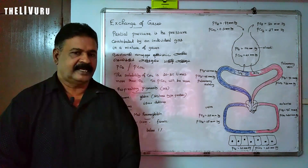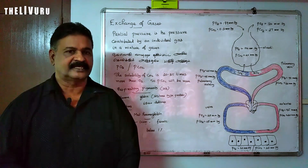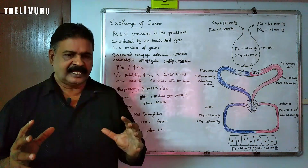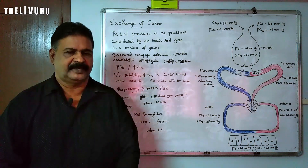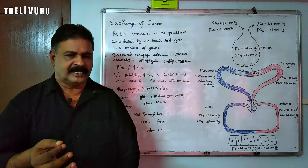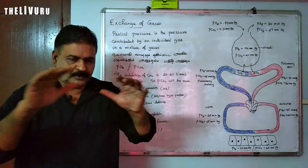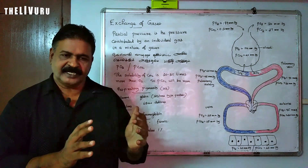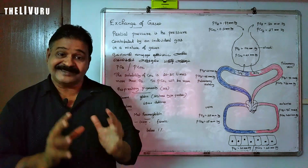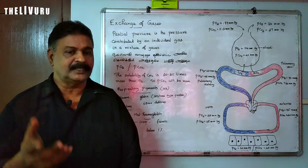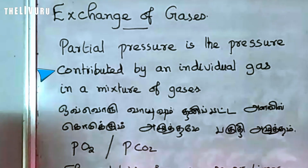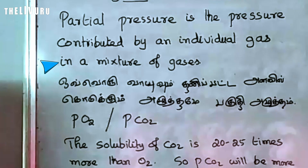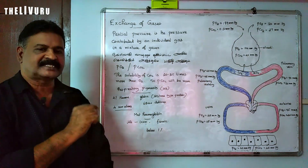In this container, there is a group of gases — oxygen, carbon dioxide, nitrogen, various types. If we add the first gas in the container, we add pressure — that is the partial pressure of oxygen. Partial pressure is the pressure contributed by an individual gas — it may be oxygen, carbon dioxide, nitrogen, or whatever — in a mixture of gases. The partial pressure of oxygen can be written as PO2, and the partial pressure of carbon dioxide can be written as PCO2.